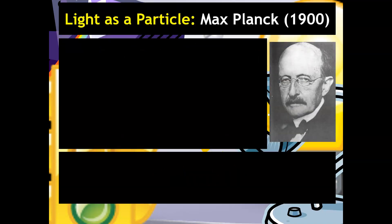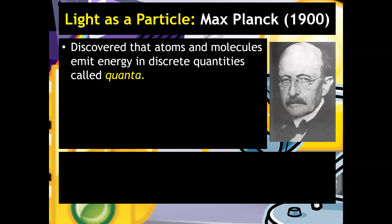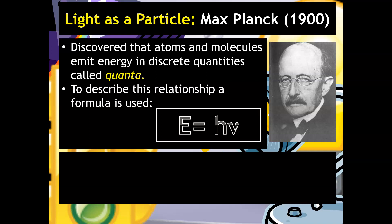So now let's talk about light as a particle and talk about Max Planck. So in the 1900s, he discovered that atoms and molecules emit energy in discrete quantities called quanta. To describe the relationship of this quanta, we focus on the fact that energy equals Planck's constant times its frequency. And so in this case, notice that there is a direct relationship between energy and frequency. As the frequency goes up, the energy goes up.